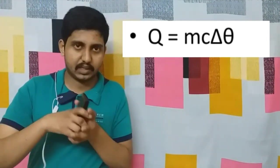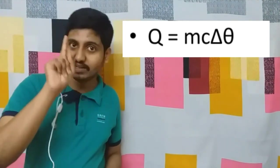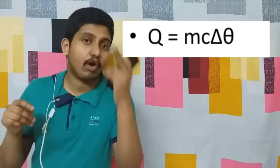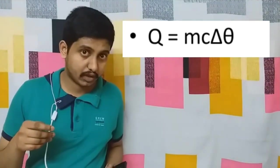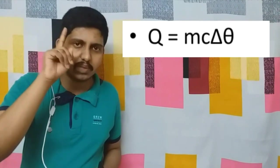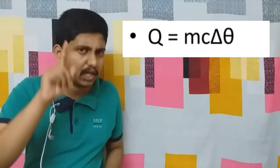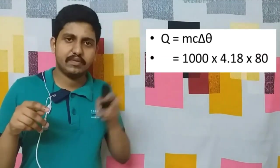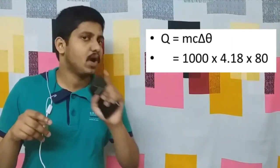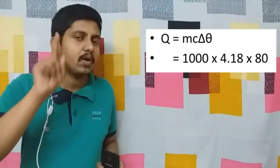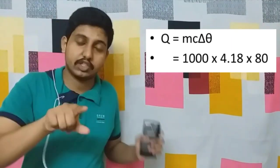The specific heat capacity of water you must remember very clearly. The specific heat capacity of water is one calorie per gram per degree Celsius, or 4.18 joules per gram per degree Celsius.